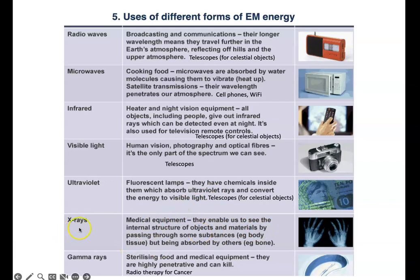Also used for telescopes to see celestial objects, certain types of tiny celestial objects. And x-rays are used for medical equipment to scan the tissues and bones in your body. And then finally gamma rays are used for sterilizing food and medical equipment. And they have, they can penetrate, they have a very high energy. And they are also used for killing cancer cells in the form of radiation treatment or radiotherapy.